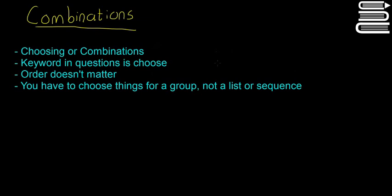Welcome to our next video. This time we're going to start talking about combinations. Combinations or choosing is a little bit different to permutations or arranging. The keyword in the questions that you have to look for is 'choose,' and that'll tell you it's a combinations question. In this case, order doesn't matter, and you have to choose things generally for groups and not for lists or sequences.